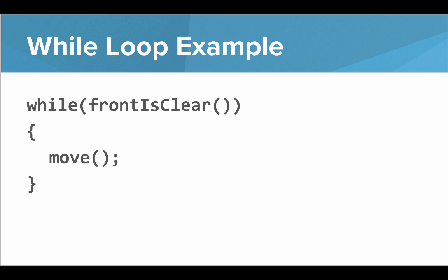Here's an example of a while loop. We can say: while, open parentheses, frontIsClear, close parentheses, move. The idea is that we'll check the condition and then do the code in between the curly brackets if that condition is true.